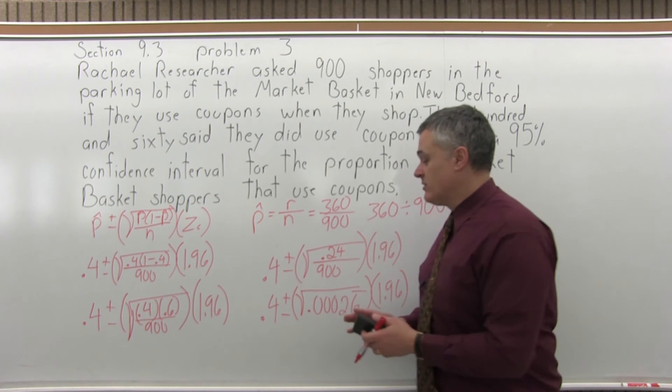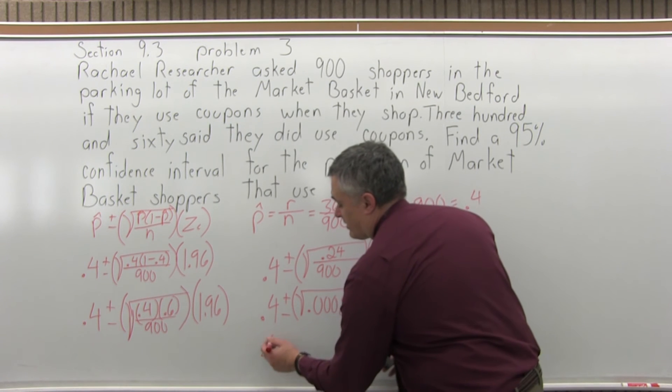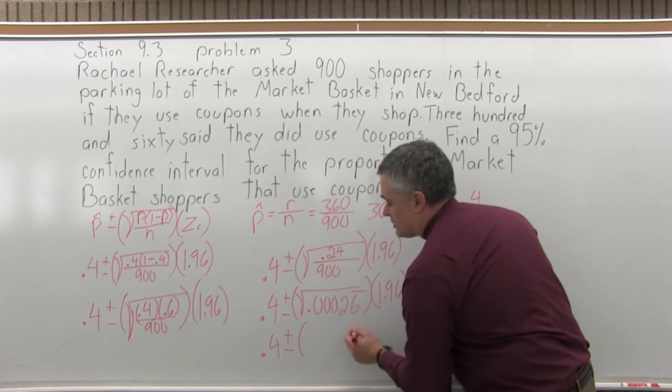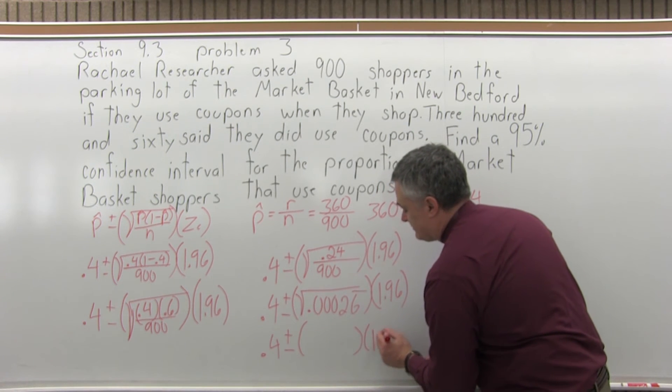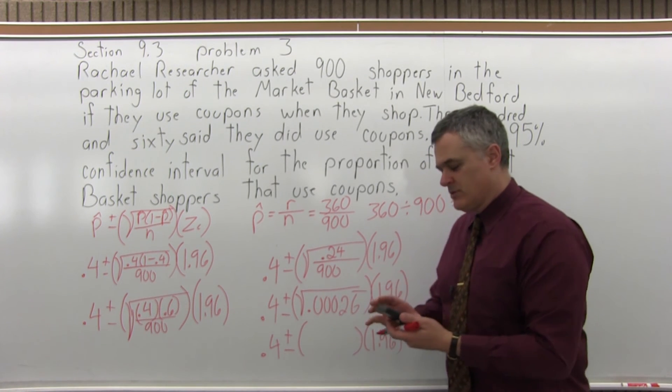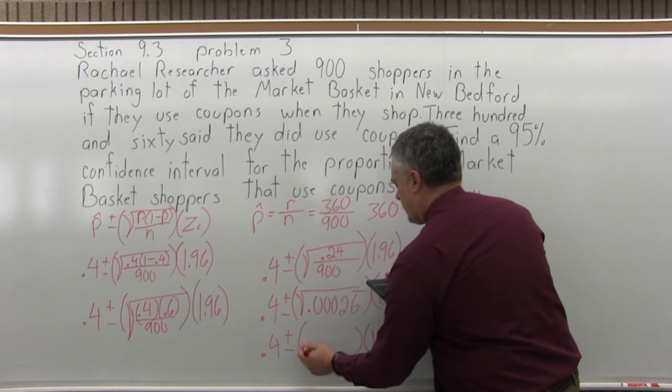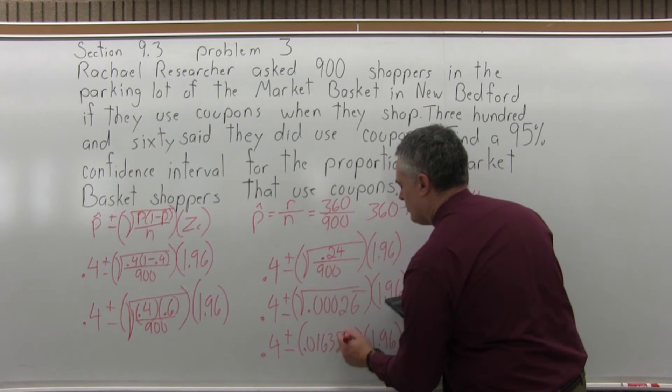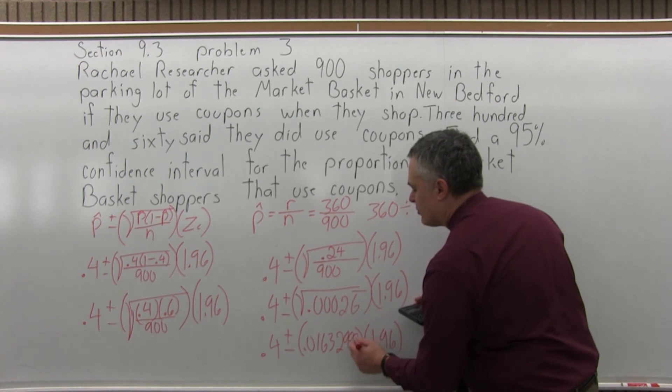That's the number under the square root. And while it's on the screen of my calculator, I'll just press my square root button. The square root of that decimal is 0.016329931.